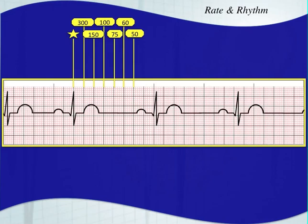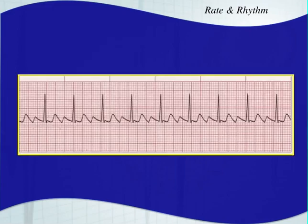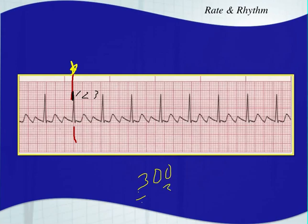That's the 300 rule. You'll see people quickly look at an EKG and count those boxes to give a rough estimate of heart rate. Let's apply it to this next rhythm. This QRS complex appears to be on a bold line, so we'll count the big boxes to the next one: one, two, three large boxes. 300 divided by three is 100, so the heart rate is just under 100 beats per minute.